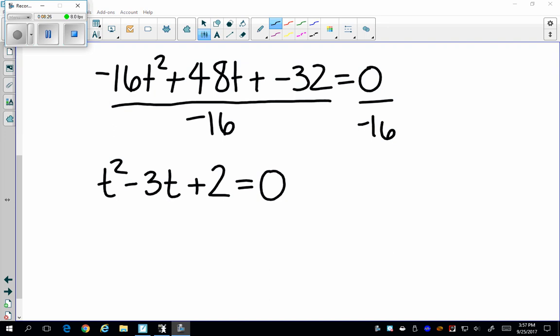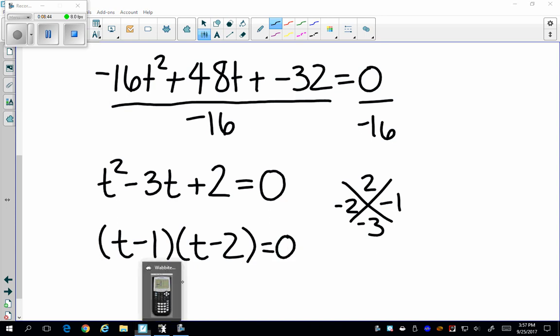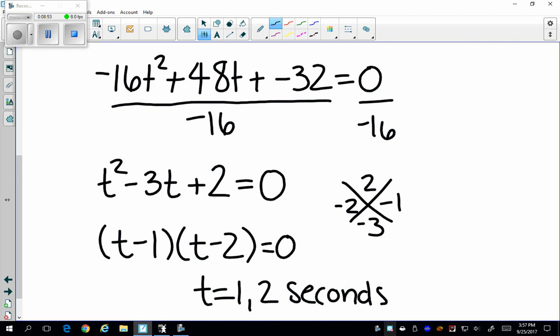So I want to find factors that multiply by 2 to add to negative 3. And I get negative 2 and negative 1. So now I can factor to t minus 1, t minus 2 equals zero. And I get that t equals 1 and 2 seconds. And that is also what I found on the calculator. Now, this was a really nice problem because it was easily factorable. If it's not, go ahead and just plug it in the calculator and look for the values there.